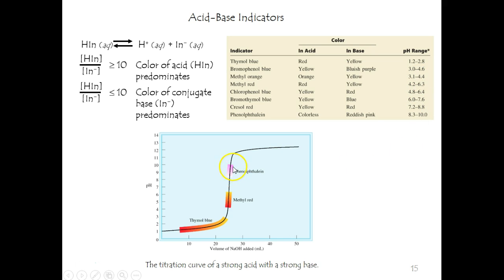However, if you are dealing with a strong base with a weak acid, you might want to choose an indicator that goes a little bit higher, and they go all the way up to 10.